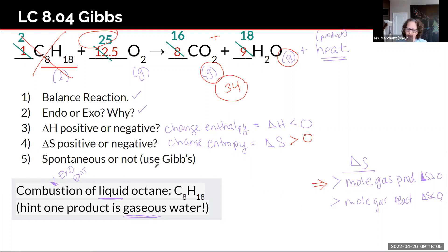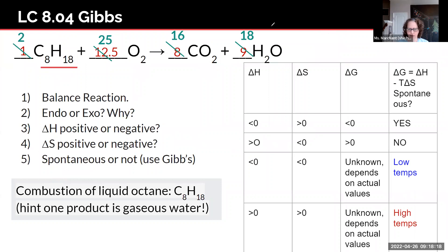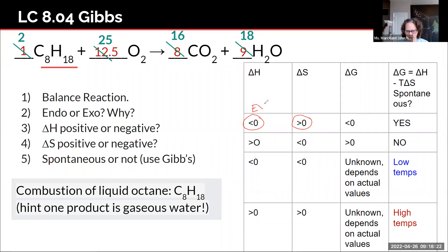For spontaneous or not, I have to go to that table. What does that table say when I am going delta H is negative, delta S is positive. Delta H is negative. Delta S is positive. Exothermic and increasing disorder.